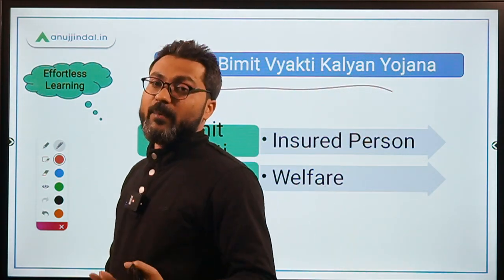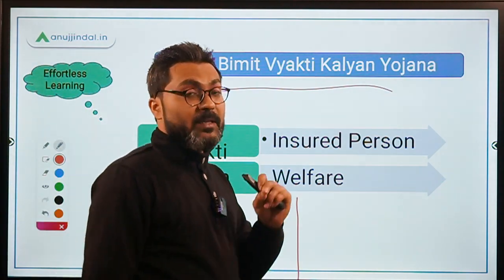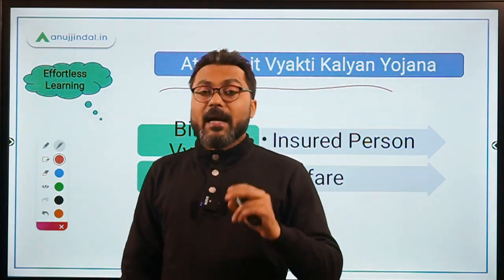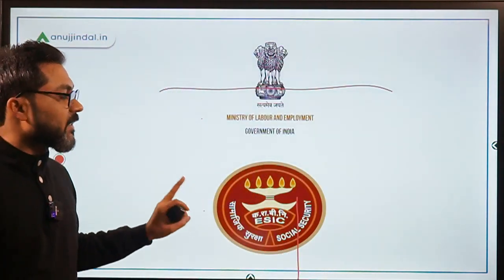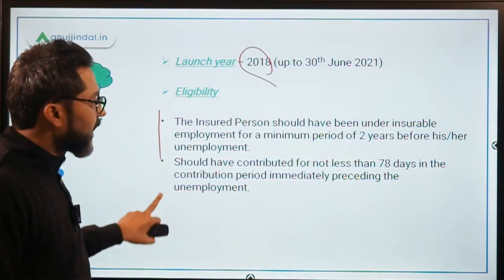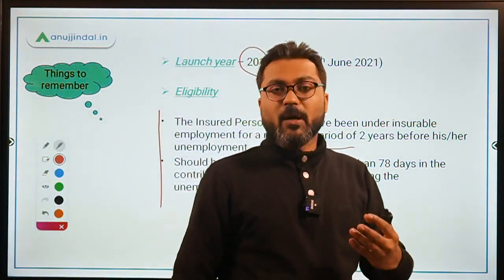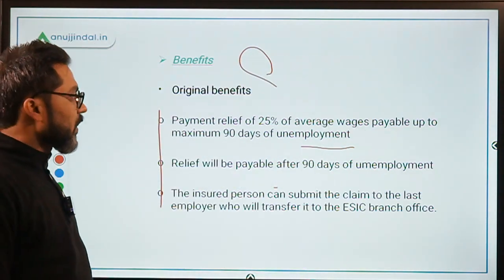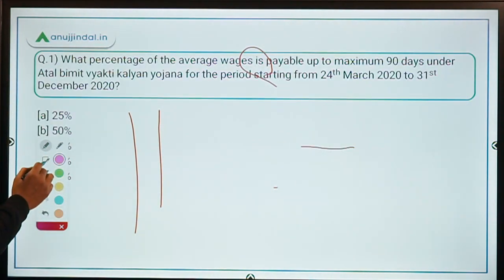To summarize: this scheme provides welfare to the insured person by giving unemployment relief to those insured under the ESIC Act of 1948 who are unemployed for a certain period. The ministry is the Ministry of Labor and Employment, the implementing agency is ESIC, and it was launched in 2018. Eligibility requires two years of insurable employment before unemployment and a minimum of 78 days of contribution.